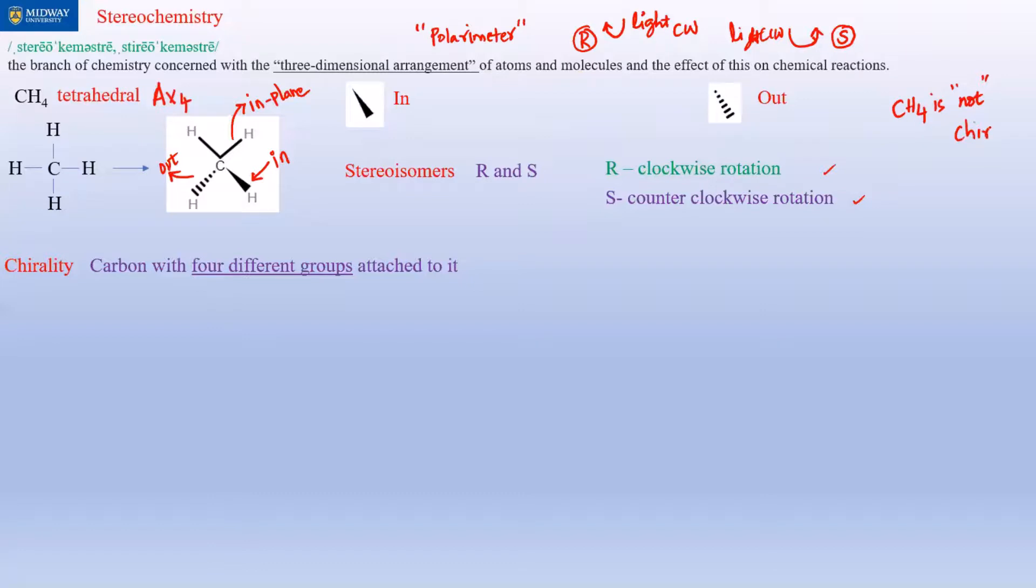What is chirality? It's not just the three-dimensional arrangement of atoms, but when you have a carbon with four different groups attached to it. That's why I gave you a three-dimensional image, but this methane CH4 is not chiral—you can call it achiral.